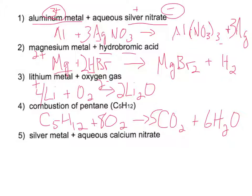Next one, silver metal and aqueous calcium nitrate. So silver metal is just Ag. Aqueous calcium nitrate is Ca(NO3)2. Calcium is a plus two, nitrate's a minus one. So that would be Ca(NO3)2. And it is a single replacement, so the silver will replace the calcium.